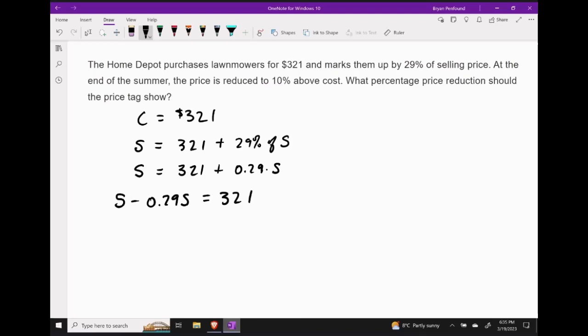And remember that there's actually a hidden one in front of this first S. So in order to combine these terms, we're going to go 1 subtract 0.29. And that gives us 0.71S is equal to $321.